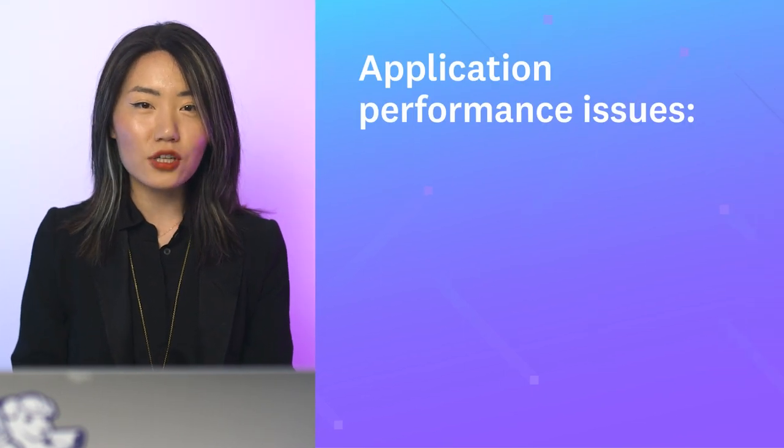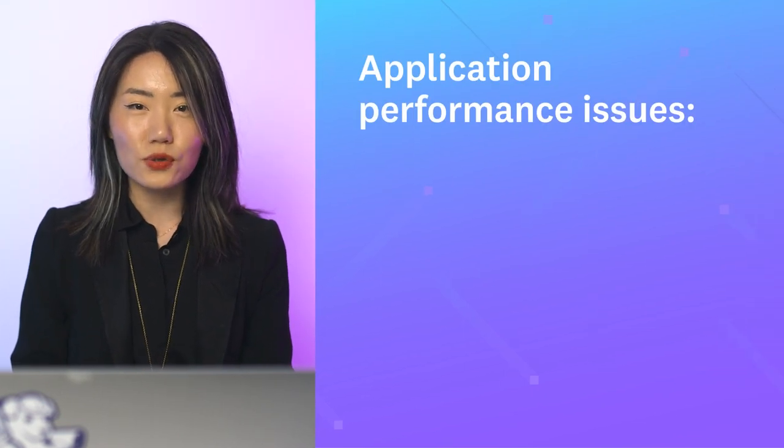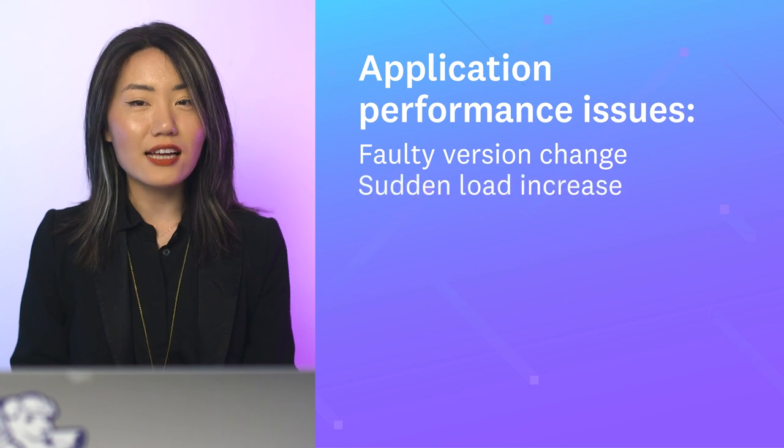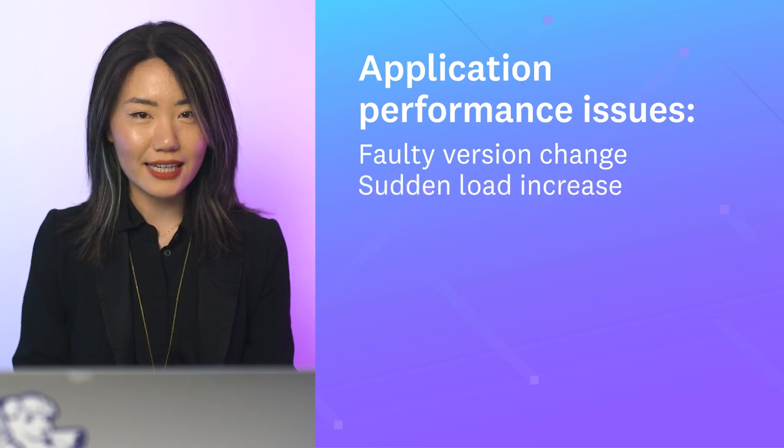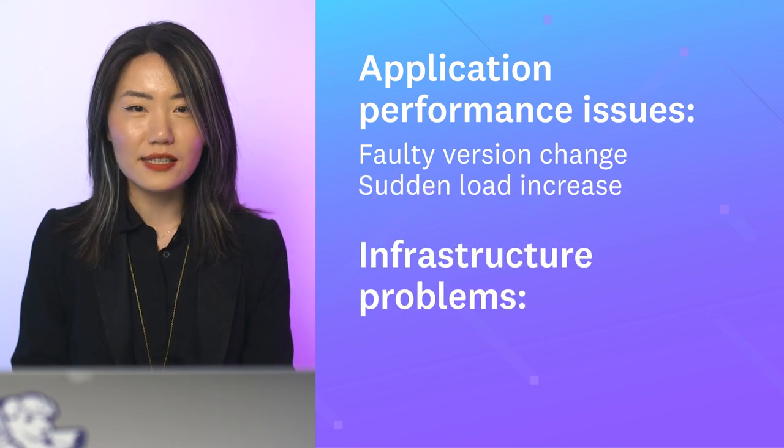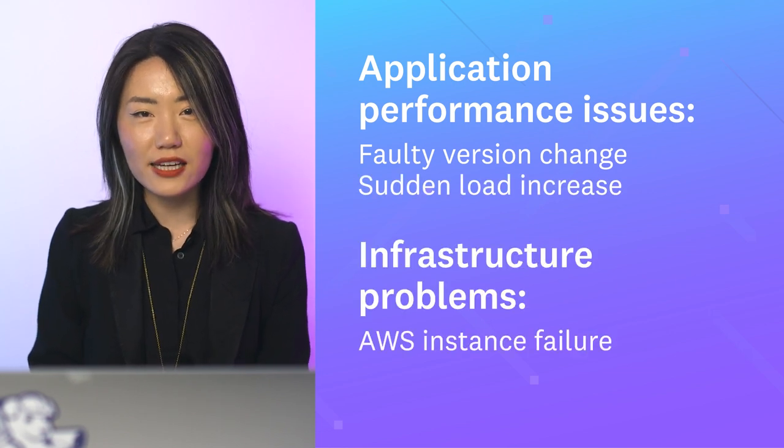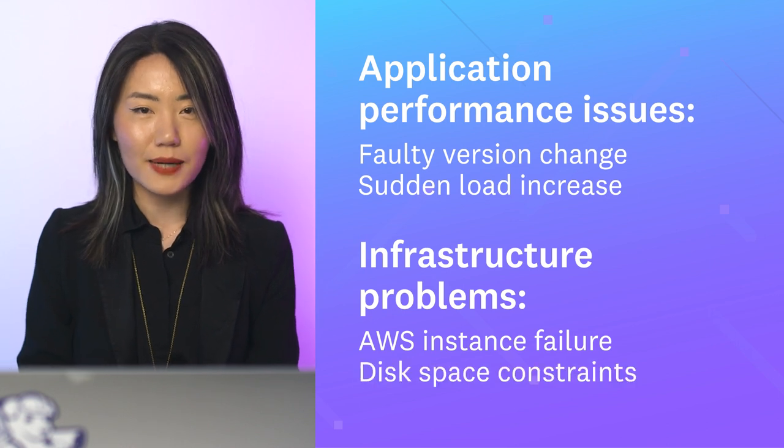Root cause analysis is now generally available with support for four root cause types. These include application performance issues such as faulty version change and sudden load increase, and infrastructure problems such as AWS instance failure and disk space constraints. You can find Watchdog root cause analysis results in your APM service pages and in Watchdog feed within your Datadog app.